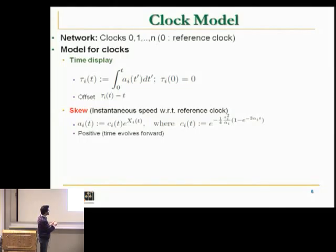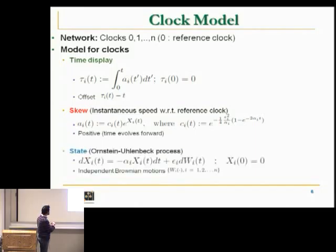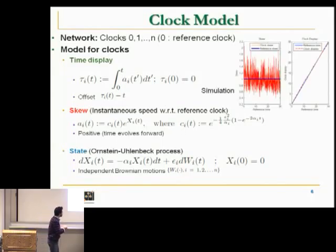The Ornstein-Uhlenbeck process is simply Brownian motion passed through a stable linear filter. It's a filtered version of Brownian motion that has nice properties. A simulation shows that if you want the skew to have a mean of one, you see fluctuations from the nominal value that are controlled. This change of instantaneous speed gives rise to difference from the 45-degree line—here it runs faster, here slower. This is exactly our model in three steps: modeling the skew based on a state, then display as the integral of the skew.